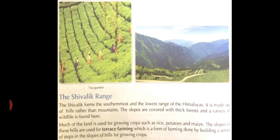Thirdly, we will discuss the Shivalik range. The Shivalik range is the southernmost and the lowest range of the Himalayas. It is made up of hills rather than mountains. The slopes are covered with thick forests and a variety of wildlife is found here.